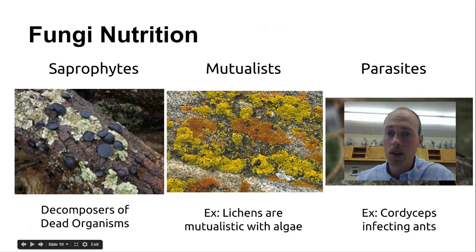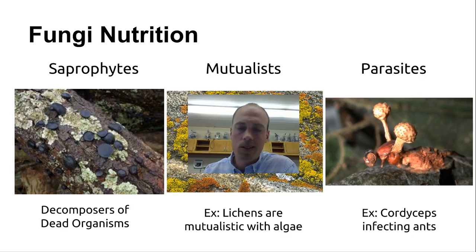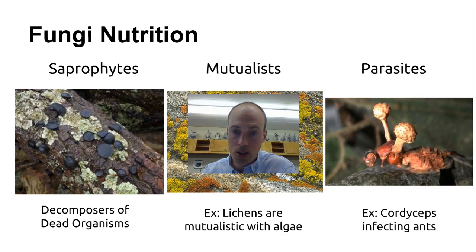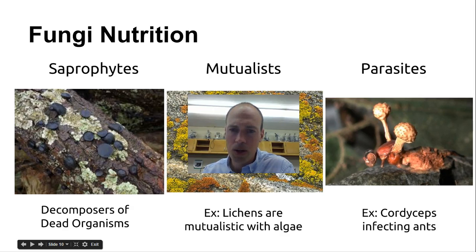Some of them can be parasitic. The example here is cordyceps — a type of fungus that will get inside an ant and then begin to control it from the inside. It basically makes the ant a zombie. It programs the brain of the ant to go to a location where it will grow best, like on top of a leaf or on the underside of a leaf. It will then kill the ant and start growing where it needs to grow. So since it can't move itself, it just programs the ant to do it, which is crazy. And that's a parasite — obviously it's not good for the ant, but it's great for the fungus.